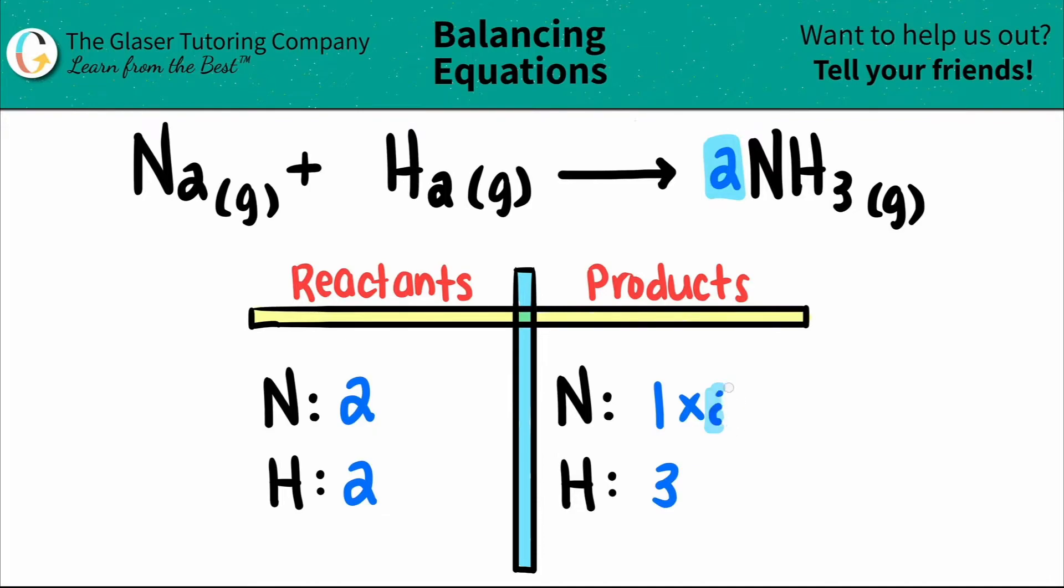But now we have to play fair. Every time that you put a coefficient in front of a compound, you have to multiply it by each individual element. In this case, I have to multiply it by nitrogen and hydrogen. So I have two nitrogens. So that was the purpose of this whole thing. And then I have two times three hydrogens, which is a total of six.